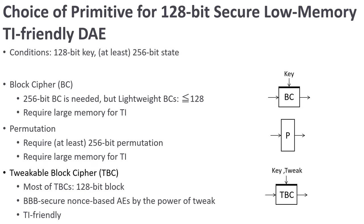In order to achieve 128-bit security, the key size must be 128 bits and the state size must be at least 256 bits. This size comes from the birthday attack on the internal state. For block cipher, in order to handle a 256-bit state, the block size must be at least 256 bits. However, block ciphers have been designed to have at least 128-bit blocks. In TI, the nonlinear state size is tripled while the linear state size is doubled. Since block size equals the nonlinear size, in TI the state size of block cipher is large, so block cipher does not meet our goal. For permutation, similarly, we need a 256-bit permutation, meaning the nonlinear size is large. So permutation does not meet our goal either.